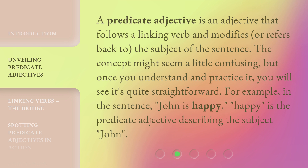A predicate adjective is an adjective that follows a linking verb and modifies, or refers back to, the subject of the sentence. The concept might seem a little confusing, but once you understand and practice it, you will see it's quite straightforward. For example, in the sentence 'John is happy,' 'happy' is the predicate adjective describing the subject, John.